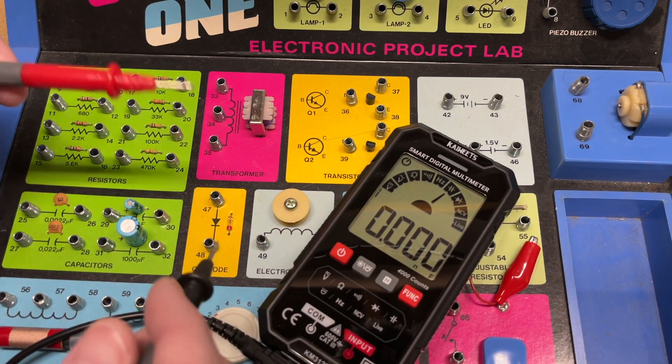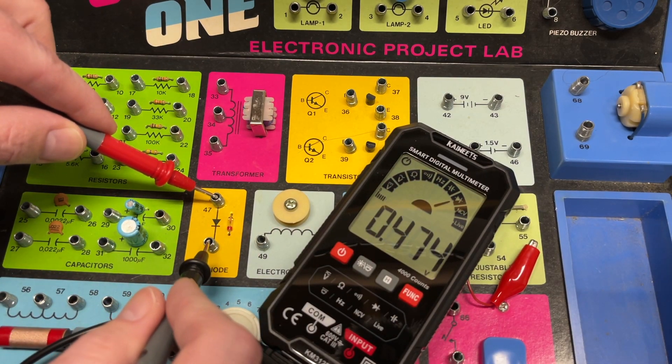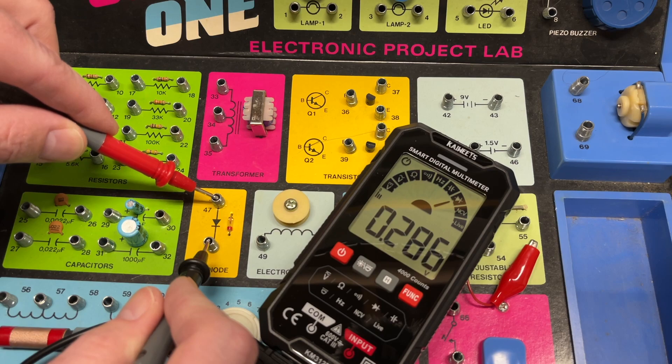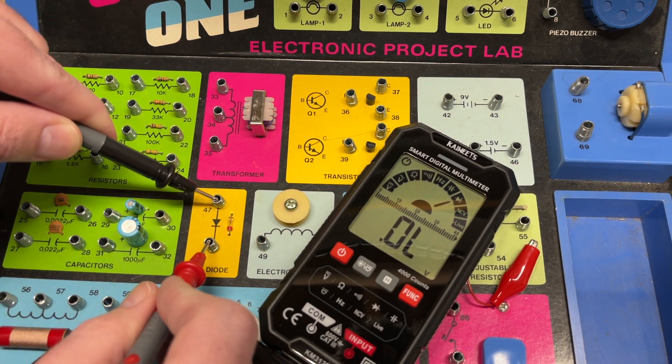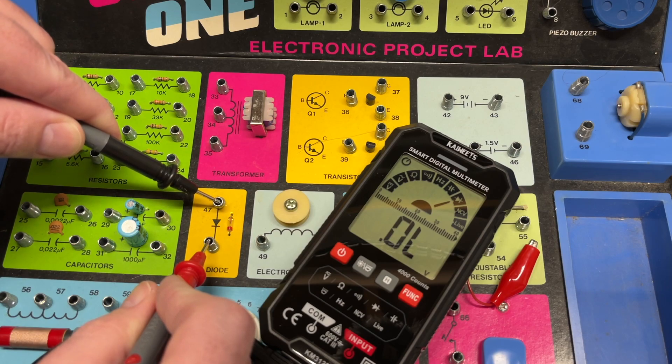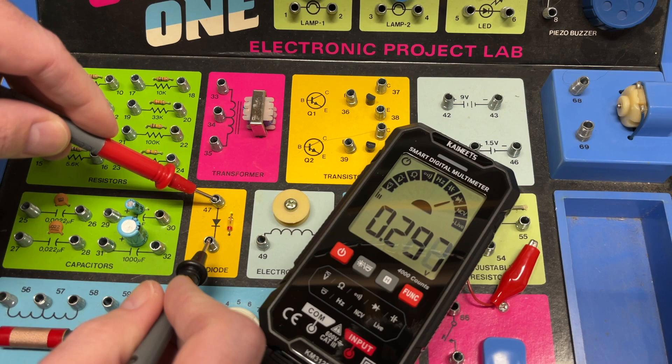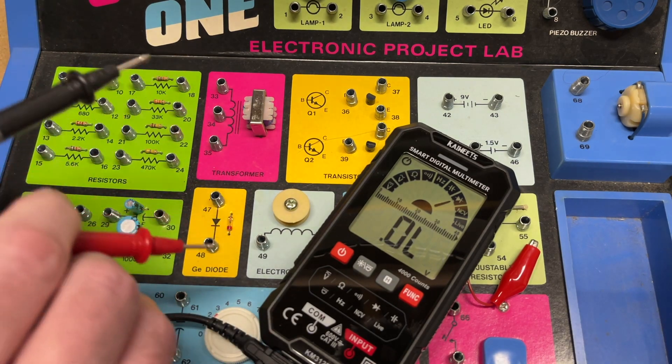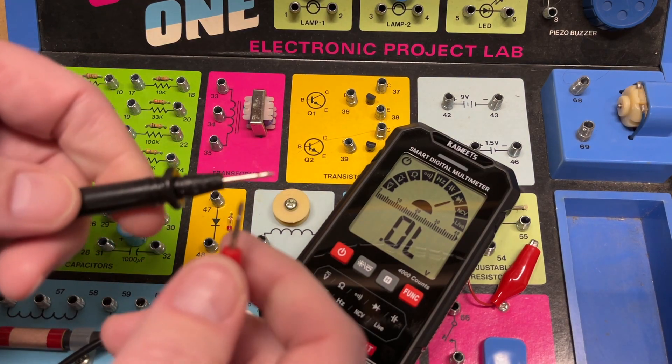Next, let's go to diode test. Here we have a diode. Let's test that. Looks like we have 0.28 volts. Let's go the other way—we have zero. You want to test those both directions: you want voltage one direction but not the other direction. So that diode appears to be good.